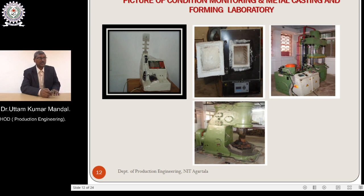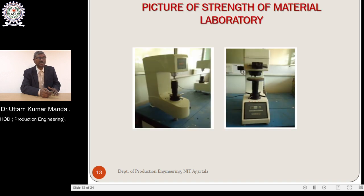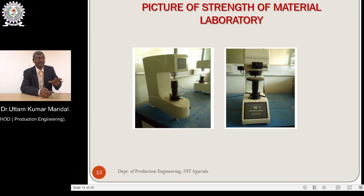There is also the picture of the condition monitoring and metal casting and forming laboratory. Casting and forming is one of the basic important parts in Production Engineering. You can see the Strength of Materials laboratory — that means measuring the hardness of different materials.